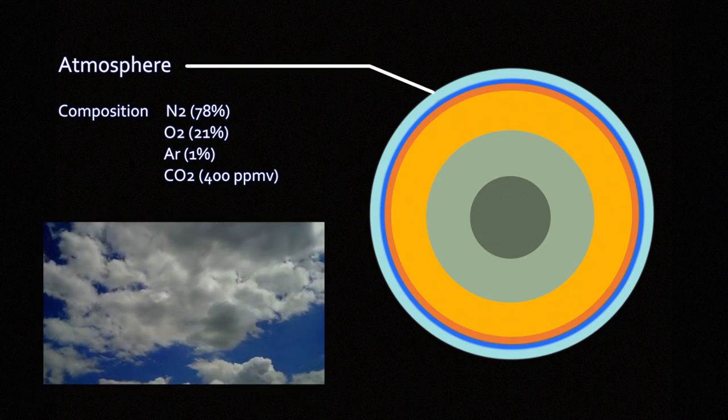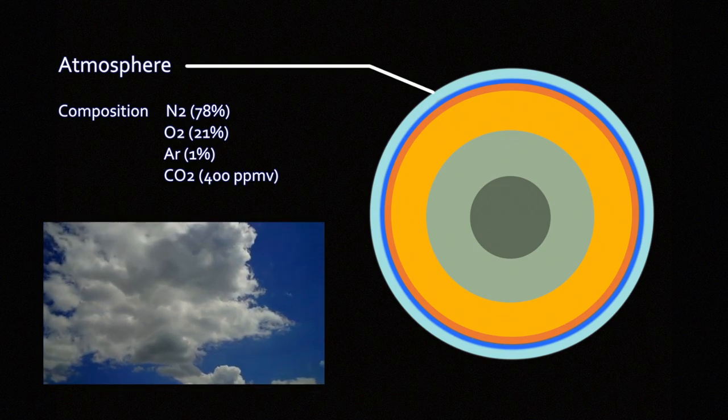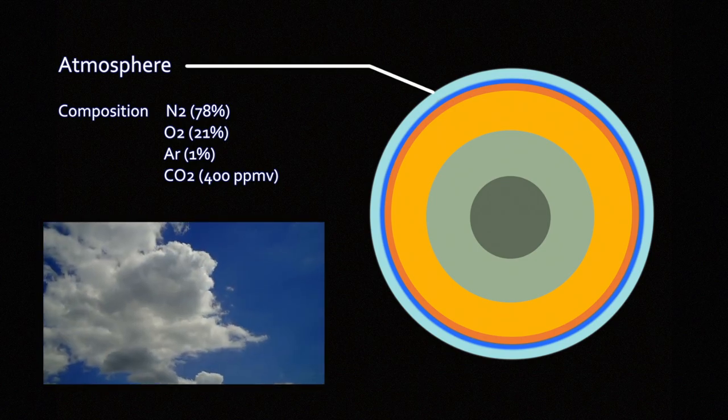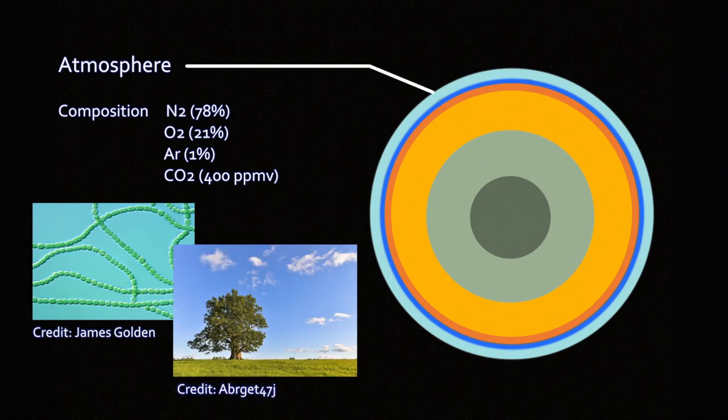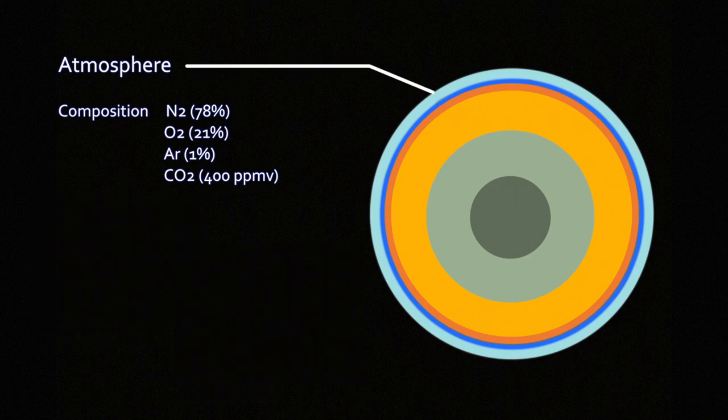Today our atmosphere is about 78% nitrogen, about 21% oxygen. All of that is produced from photosynthesis by bacteria and green plants. About 1% of our atmosphere is argon, and that may seem kind of random, but no. Argon, we don't breathe that.